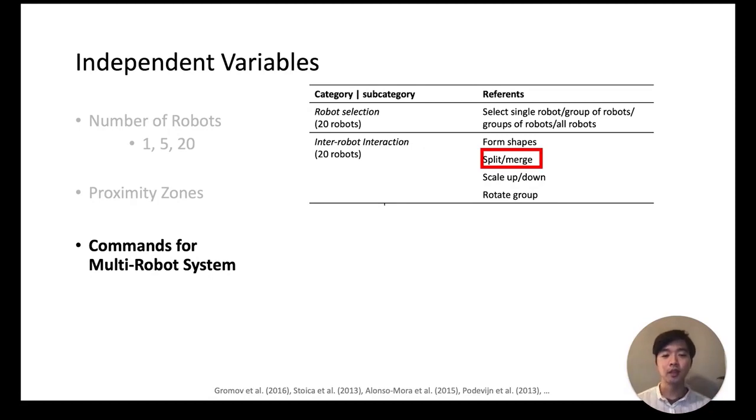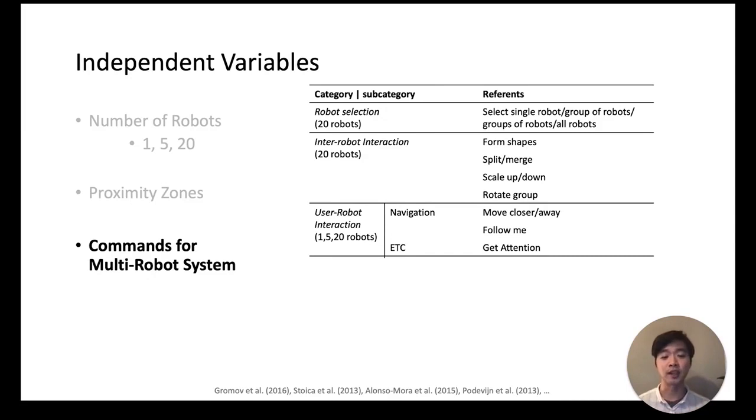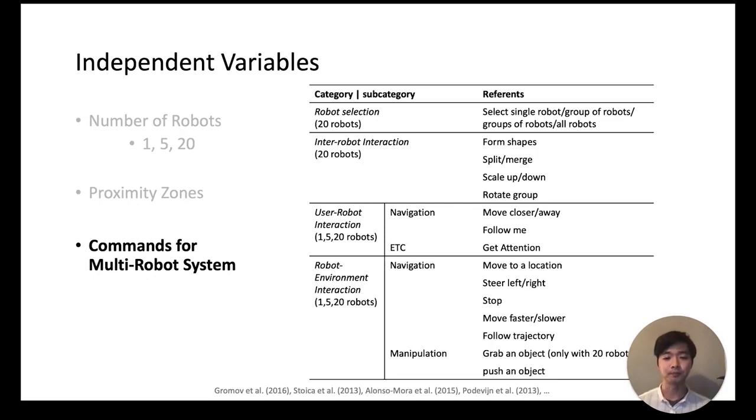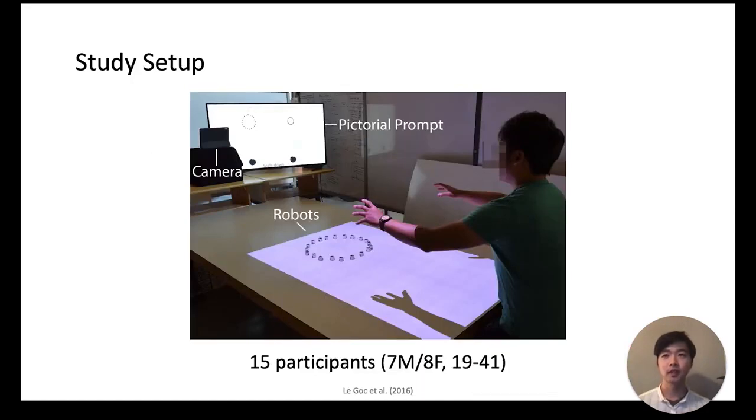For example, for split and merge tasks, participants had to either split up a group into two groups or merge them into one. Another category is user-robot interaction where the user either tries to get attention of the robot or decides on the spatial relationship between the robot and the user. Lastly there is robot-environment interaction. Here participants either decide how the robots navigate in the environment or the speed at which they navigate. They also command robots to manipulate objects in the environment, for example asking them to grab an object.